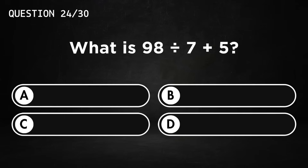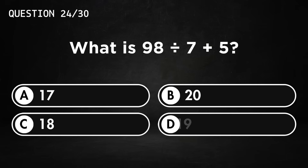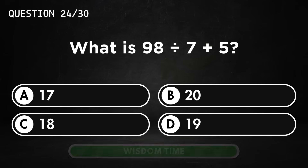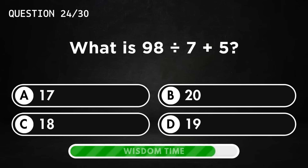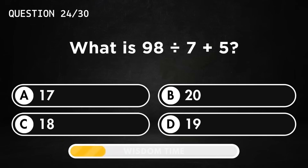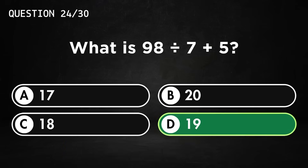What is 98 divided by 7 plus 5? Answer D, 19.